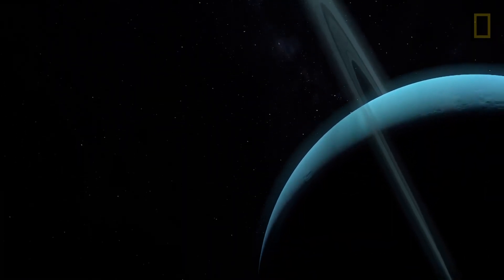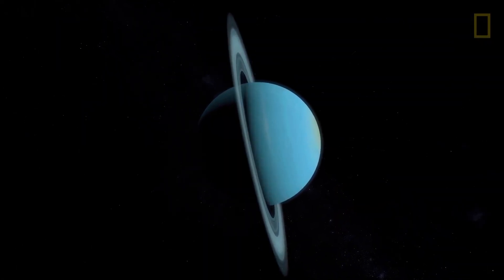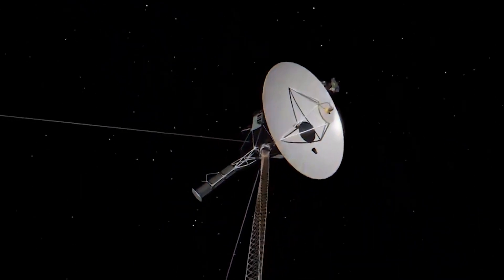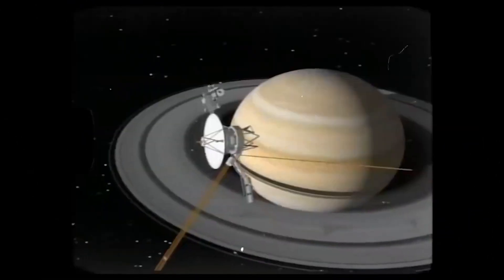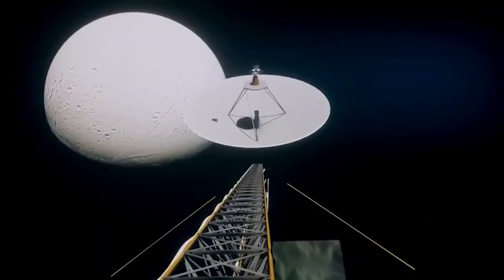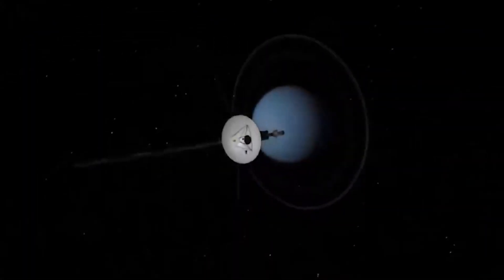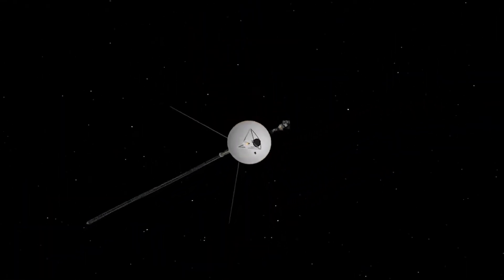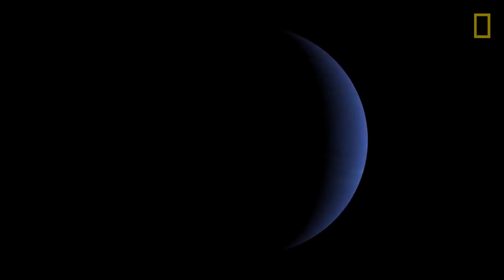Following the Uranus encounter, Voyager 2's encounter with Neptune capped a 7 billion kilometer journey, when on August 25th, 1989, it flew about 4,700 kilometers over the cloud tops of the giant planet, the closest of its four flybys. During the encounter, the spacecraft discovered six little moons and four new rings. Because Neptune received so little sunlight, many scientists had expected to see a placid, featureless planet.